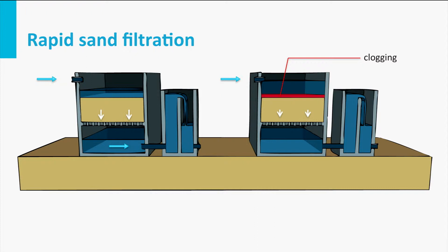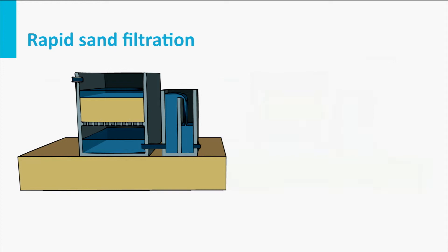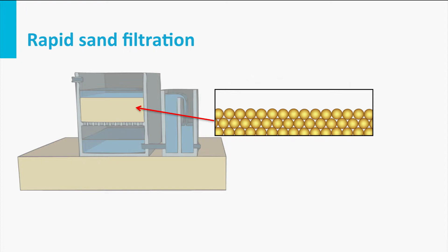During filtration, water passes through a filter bed and suspended solids are removed. Sieving is one of the mechanisms responsible for removal when the suspended solids are too large to enter the pores of the filter bed. In this case, the solids accumulate on the top of the filter bed.